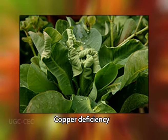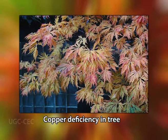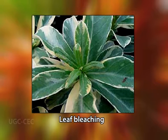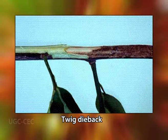Symptoms of copper deficiency include reduced growth, distortion of younger leaves, and possible necrosis of the apical meristem. In trees, multiple sprouts occur at growing points, resulting in a bushy appearance. Young leaves become bleached, and eventually there is defoliation and dieback of twigs. In forage grasses, young leaf tips and growing points are affected first; the plant is stunted and chlorotic.